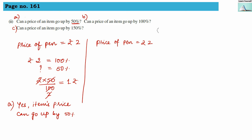For question b, can a price of an item go up by 100%? If the price of a pen is 2 rupees and it increases by 2 rupees, then 2 + 2 = 4 rupees. The price can go up to 4 rupees, which is a 100% increase. So question b is also yes.